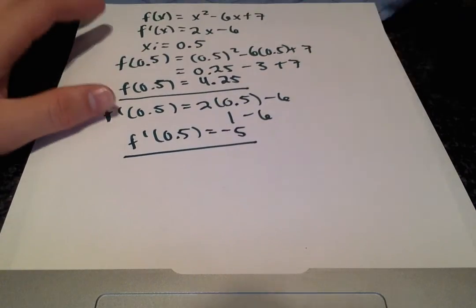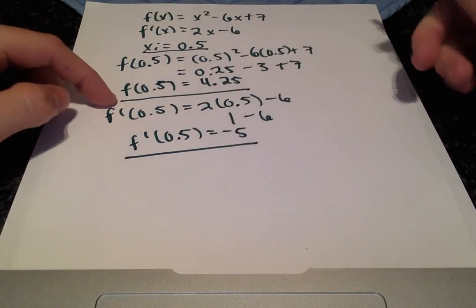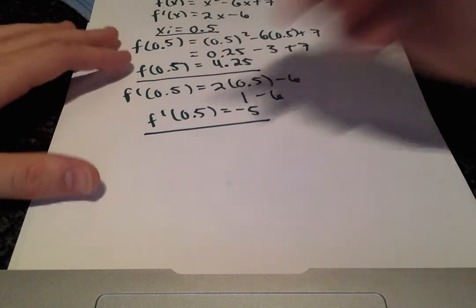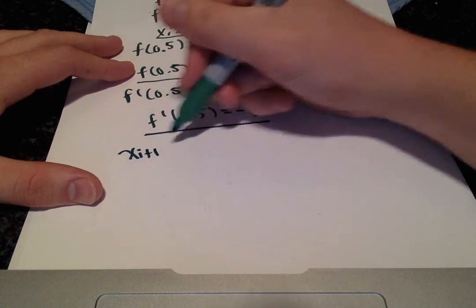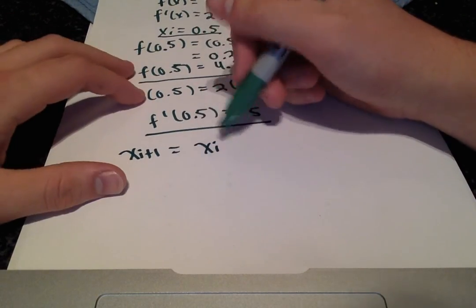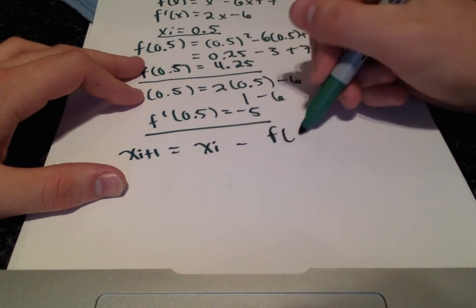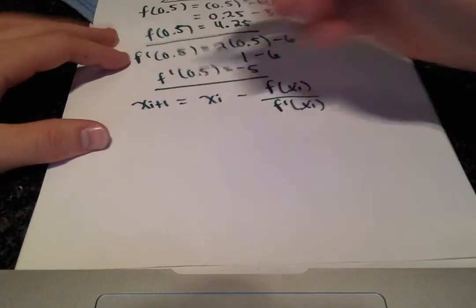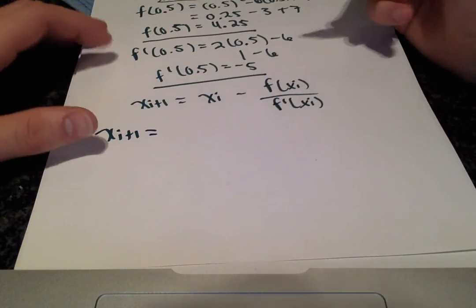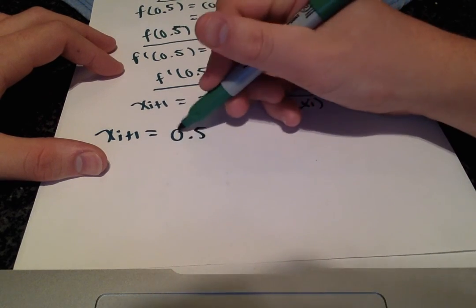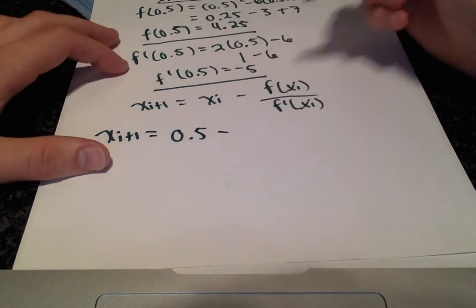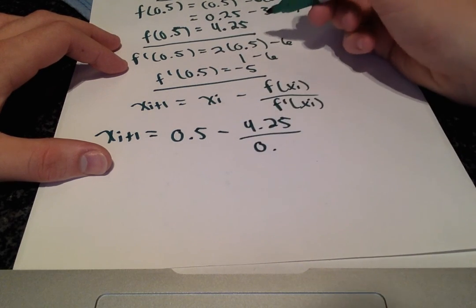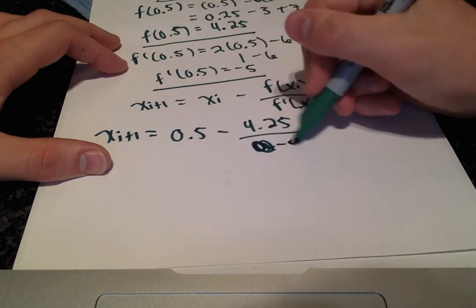Okay, so we have our xi value, our function value, and our f prime value. And I'll rewrite the general formula. So our approximation equals our initial value minus f of xi over f prime of xi. And substituting these values, we get our approximation, our first iteration. We get our approximation of 0.5 minus 4.25 over negative 5.